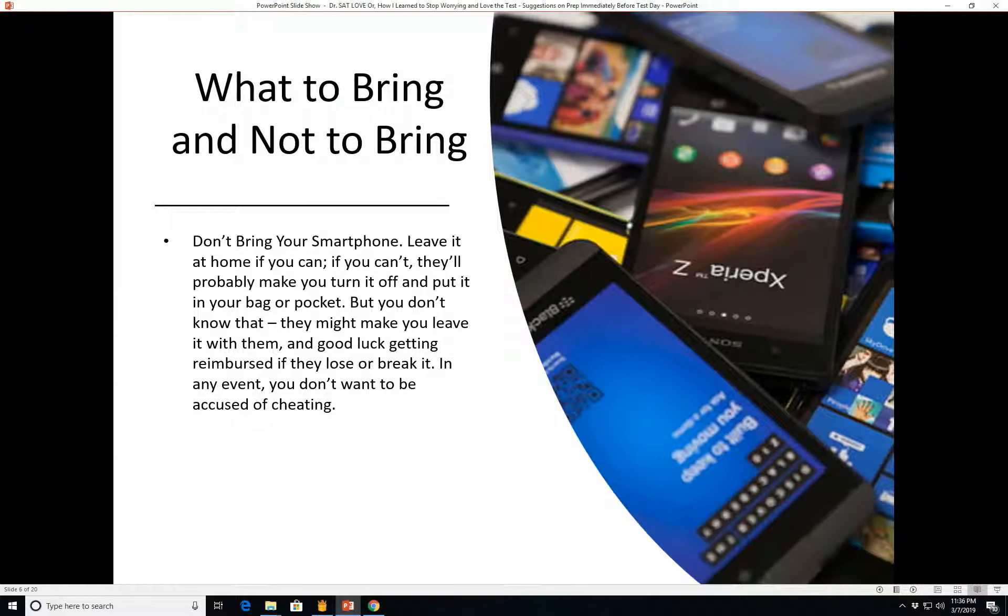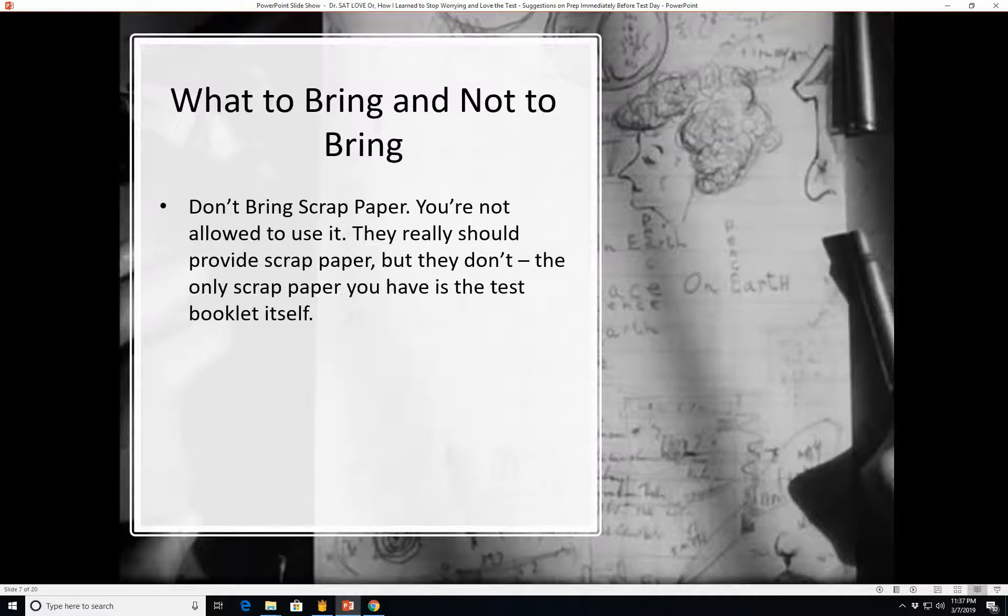Again, not even the essay. So more what to bring and not to bring. Again, don't bring your smartphone. Leave it at home if you can. If you can't, they'll probably make you turn it off and put it in your bag or in your pocket. But you don't know that they might make you leave it with them and good luck getting reimbursed if they lose it or break it. In any event, in case your phone goes off while, you know, you thought you turned it off, etc. You don't want to be accused of cheating. So I would say if you can at all, just leave the cell phone at home. Don't bring scrap paper. You won't be allowed to use it. They really should provide scrap paper at the SAT, but they don't. The only scrap paper you have is the test booklet itself and the little practice sheet on the answer thing for the essay. Anyway, don't bring scrap paper.